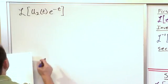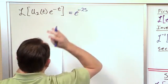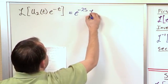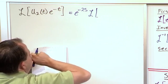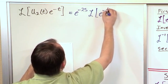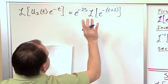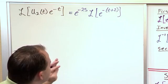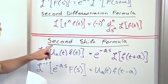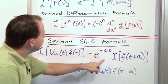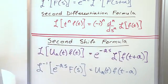So that's going to become, since we're shifting at 2, e to the minus 2s that comes out. And then we still have to take the Laplace transform, but we're going to shift the function in time — e to the minus (t plus 2). We still have to take the Laplace. Whatever value of a is, you substitute t plus a into your function, and that's what you have to take the Laplace transform of.